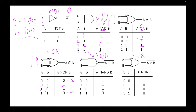These are called truth tables — they show every possible input and every possible output. With two inputs A and B, the possible input combinations are 0,0 / 0,1 / 1,0 / 1,1. For a NOT gate there is only one input so options are just 0 and 1. NAND and NOR are the mirror image of AND and OR — every output is flipped. So in NAND, if any input is 0 you get a 1; and if both inputs are 1 you get a 0.